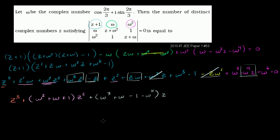The constant terms (from a z perspective) are: 2ω³ (we have an ω³ here and another one there), minus ω⁶, and minus 1. All of this needs to equal 0.